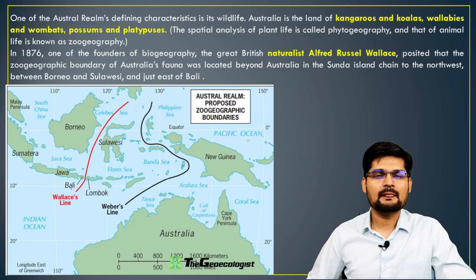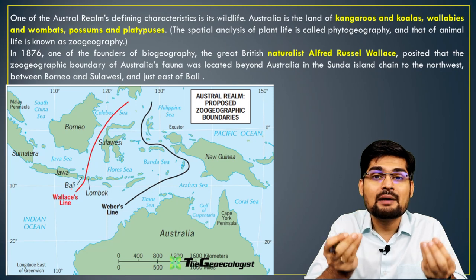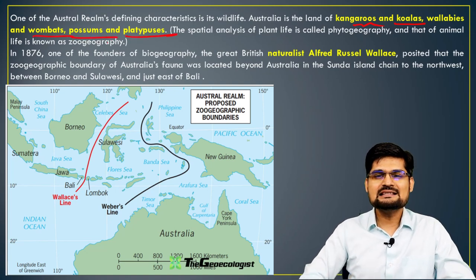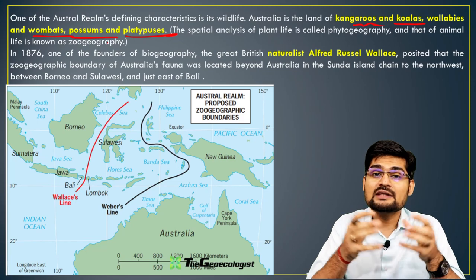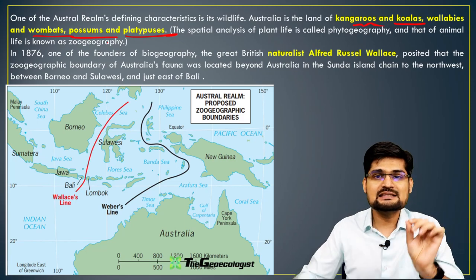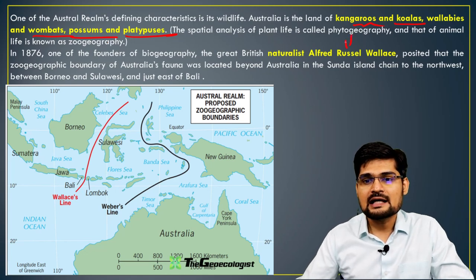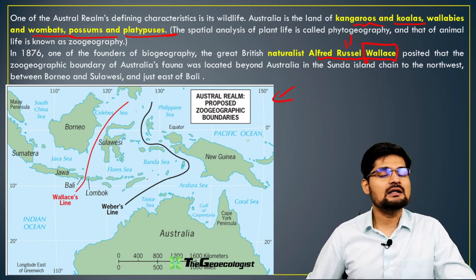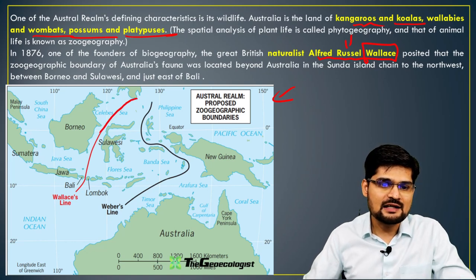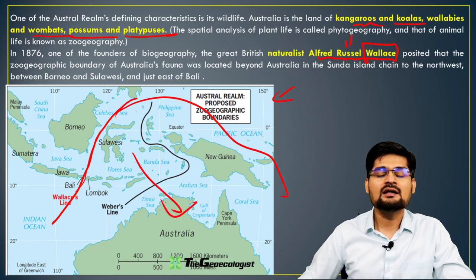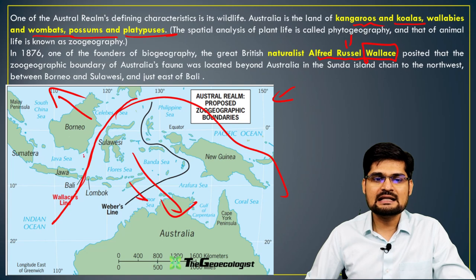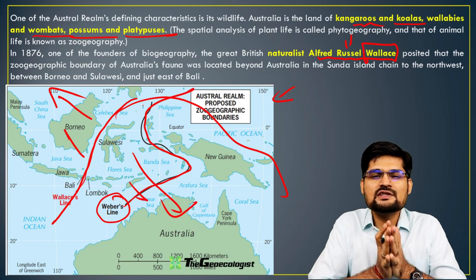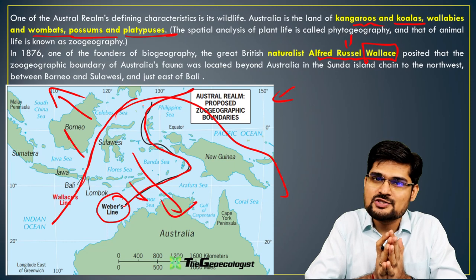One of the most important features of the Austral Realm is its interesting biogeography. Animals like kangaroos, koalas, wallabies, wombats, possums, and platypus are very unique to this realm, along with floral species like eucalyptus and several others. Remember the naturalist Alfred Russel Wallace — we have studied his biogeographic classification. He defined the boundary of this realm; the Wallace Line, shown as the red boundary, marks where this area's unique characteristics differ from the outside. There is also Weber's Line. These features make the Austral Realm a very unique biogeographic location on the planet.